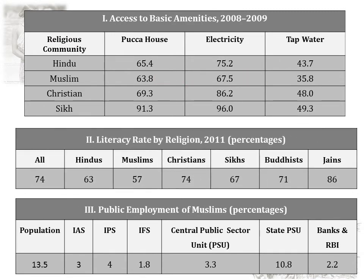Looking at literacy rates by religion based on 2011 data: Hindus 63%, Muslims 57%, Christians 74%, Sikhs 67%, Buddhists 71%, Jains 86% — here also Muslims had the least. Looking at public employment of Muslims as a percentage of their 13.5% population share: only 3% became IAS officers, IPS 4%, IFS 1.8%, public sector units 3.3%, PSUs 10.8%, and RBI banks 2.2%. From this data, we can understand the disadvantaged situation of Muslim communities.